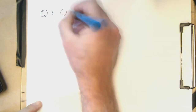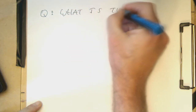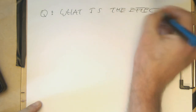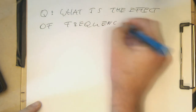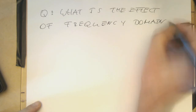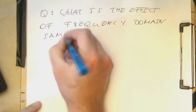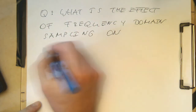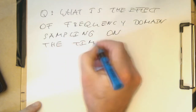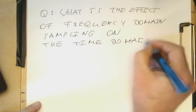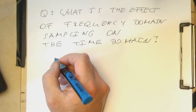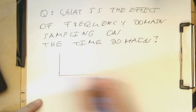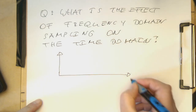What is the effect of frequency domain sampling on the time domain? Remember, the DFT has samples both in the time domain and the frequency domain. If we have a frequency spectrum here, that's our frequency spectrum, and k is the frequency index.